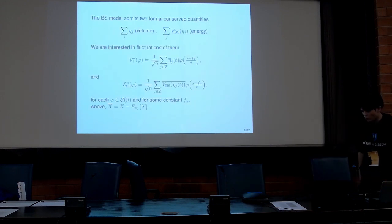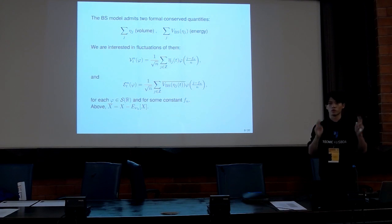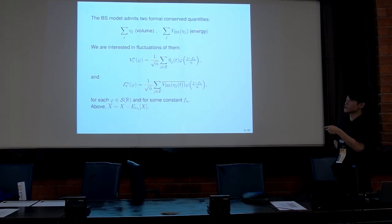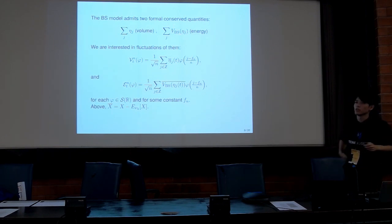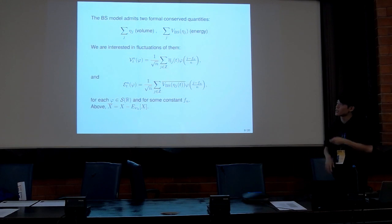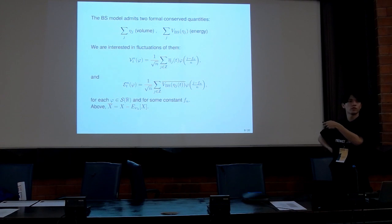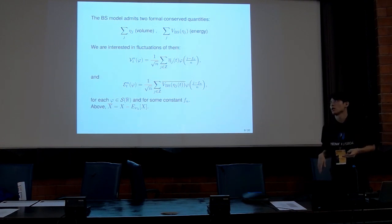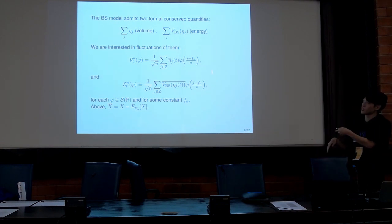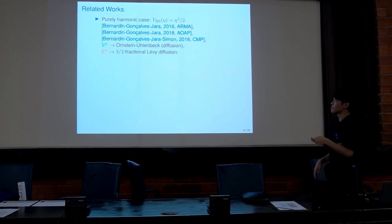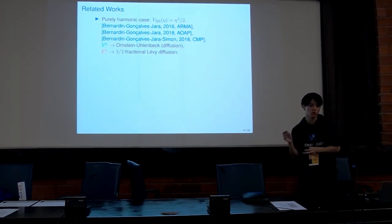What is notable for this model is that it has two conserved quantities. One is volume, given by the sum of eta_j, and the other is referred to as energy, given as the sum of the potential evaluated at neighboring pairs. We are interested in the fluctuations of these two conserved quantities: the volume fluctuation and the energy fluctuation. We want to understand the limiting behavior as n tends to infinity, and it depends on the choice of potential V.